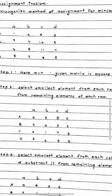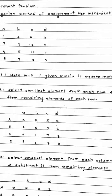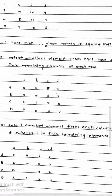So the step number 2 is: select smallest element from each row and subtract it from remaining elements of each row. So the matrix will look in this way.